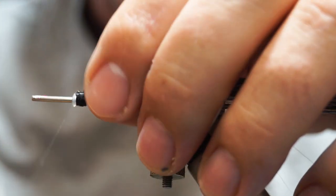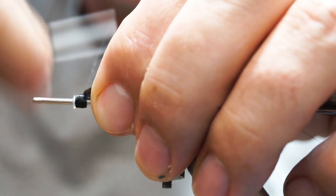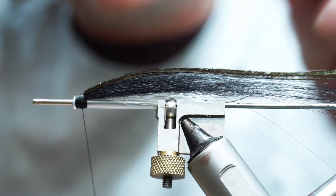And that's our fly tied. So we just need to sort the head. So we're using a black thread, just making up your head.